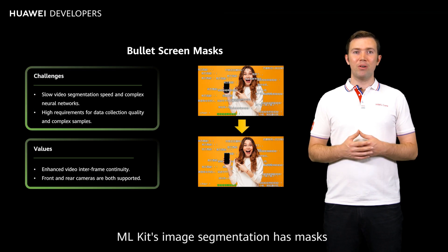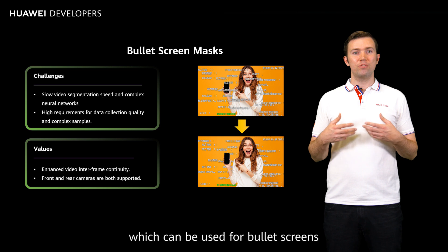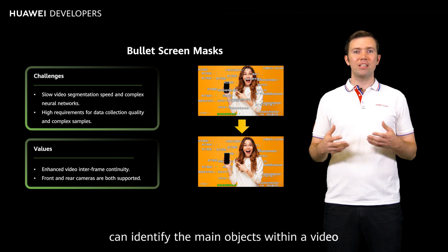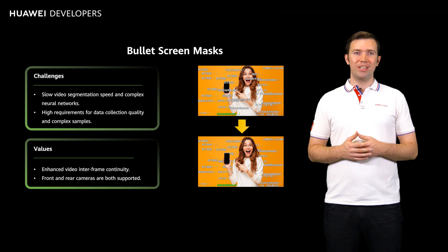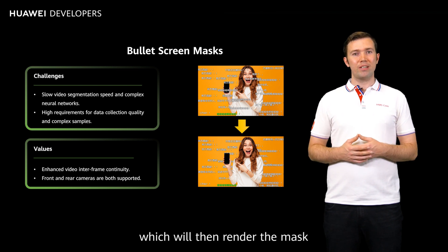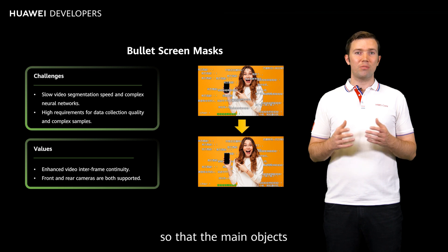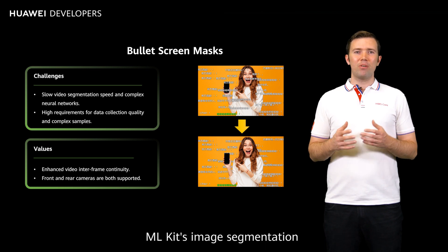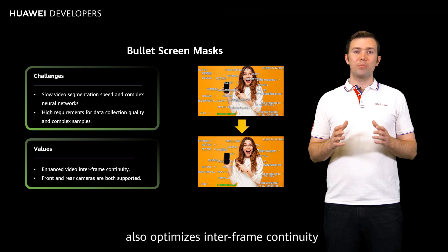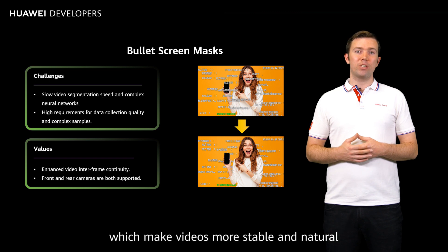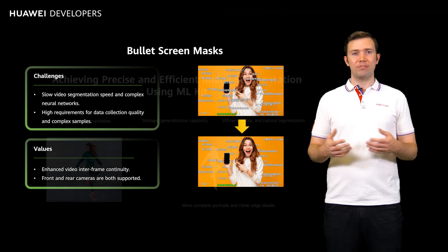For longer videos, ML Kit's image segmentation has masks which can be used for bullet screens. The semantic segmentation can identify the main objects within a video, generate a mask, and send it to the front end, which will then render the mask so that the main objects are not blocked by the user's scrolling comments. ML Kit's image segmentation also optimizes inter-frame continuity and edge precision, which make videos more stable and natural.